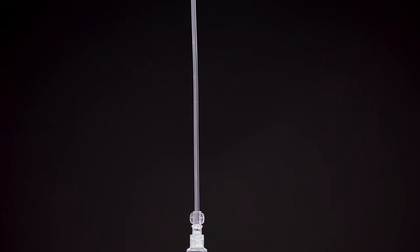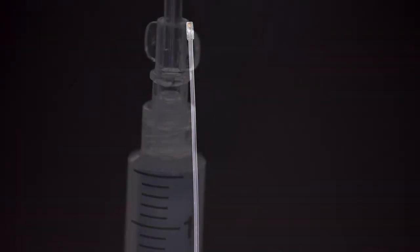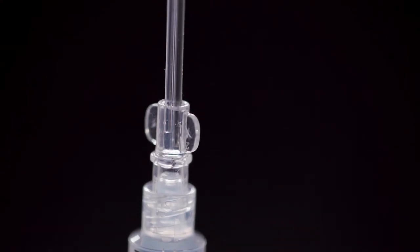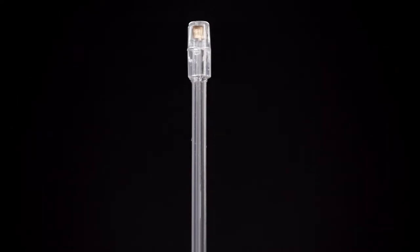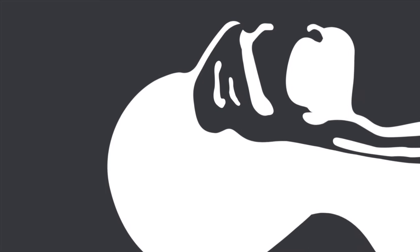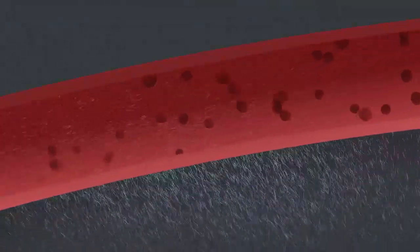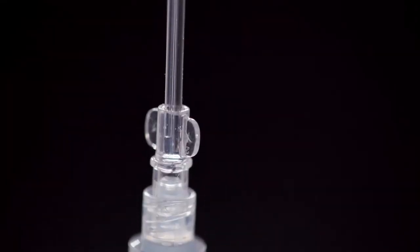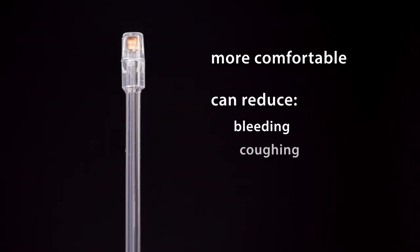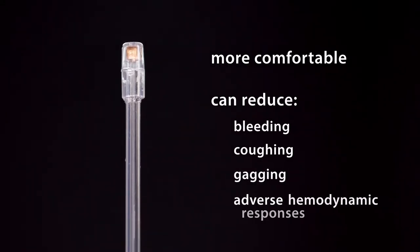The DART Reach is a mucosal atomization device attached to a long malleable stylet. It is used to deliver exact doses of atomized topical anesthetic and/or vasoconstrictor solutions directly into the nasal cavity, upper airway, and glottic opening prior to procedures such as awake intubation. This method allows the solution to absorb rapidly into the bloodstream, making the procedure more comfortable for the patient and reducing bleeding, coughing, gagging, and adverse hemodynamic responses.